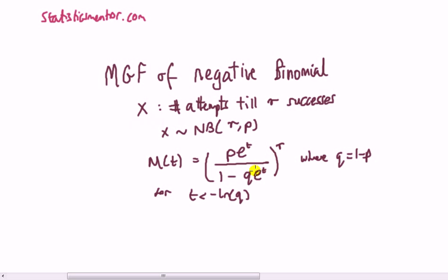And then this is the MGF. Now, two things to note. First is that this MGF formula can be slightly different to what you are looking at because it depends on how you define this x. This x here is defined as number of attempts until r successes.